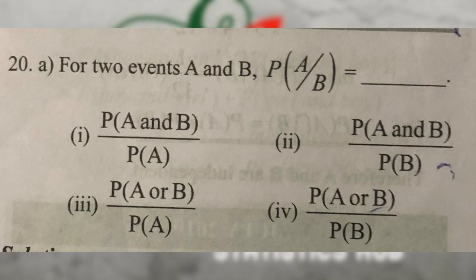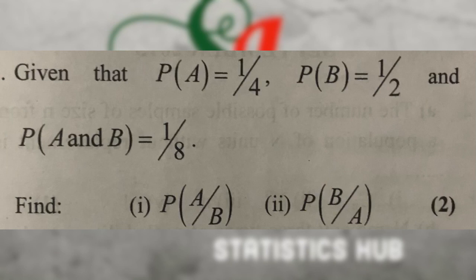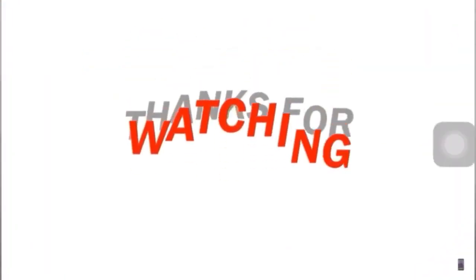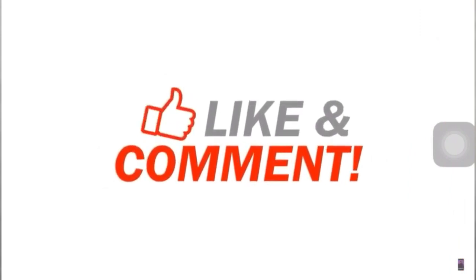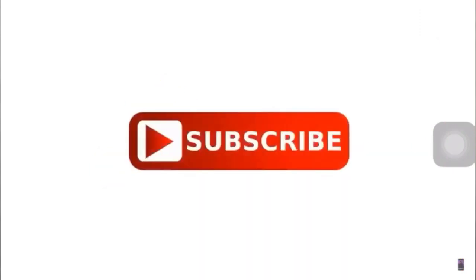For two events A and B, P of A given B is given. The formula is P of A and B divided by P of B. Given P of A and B equals one by eight, find P of A given B and P of B given A using the conditional probability formula.